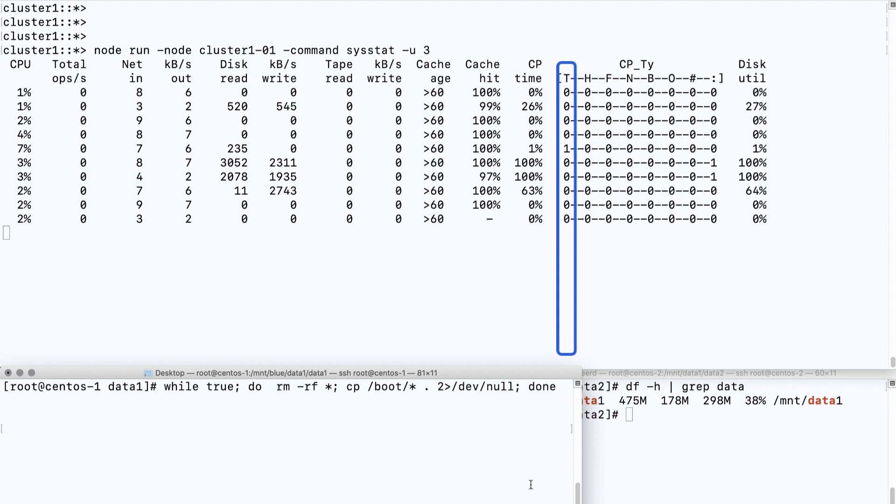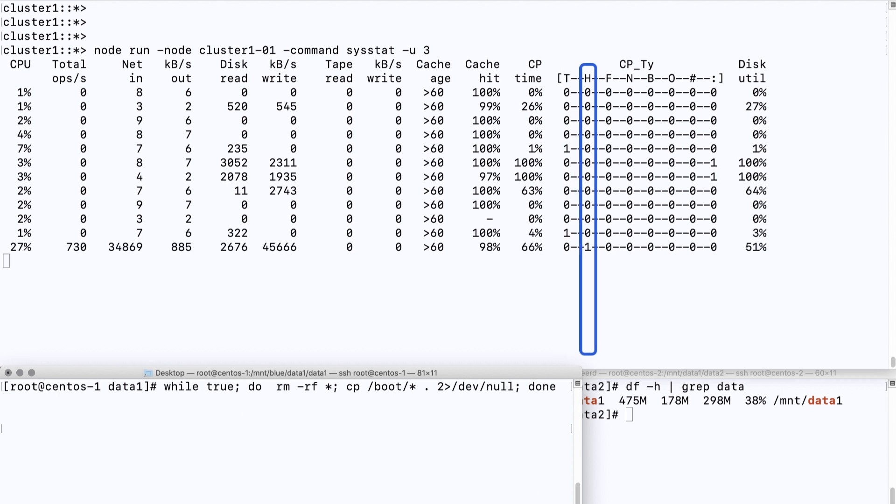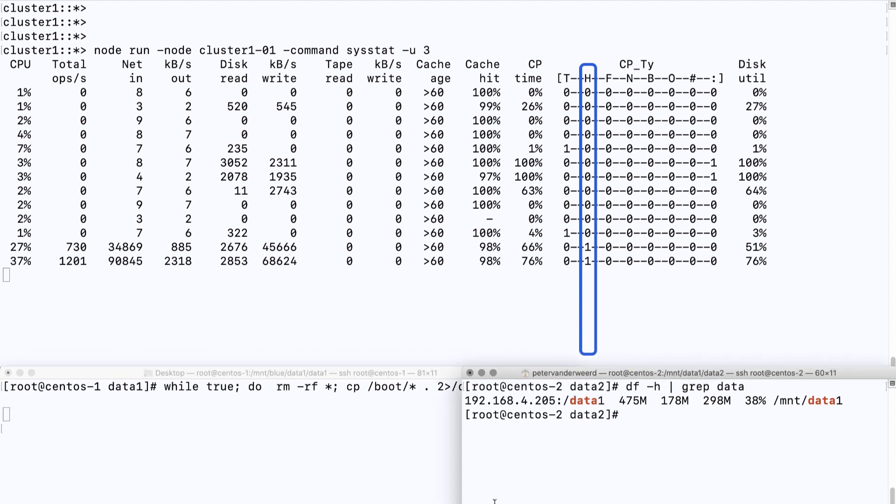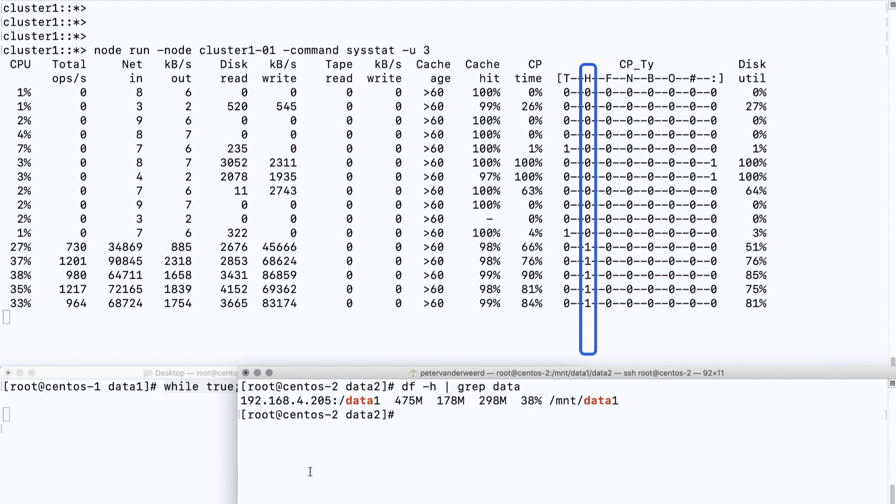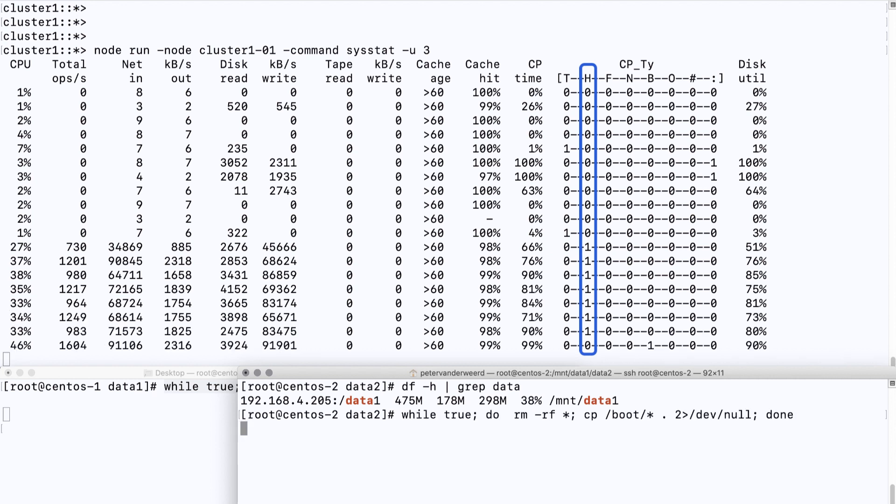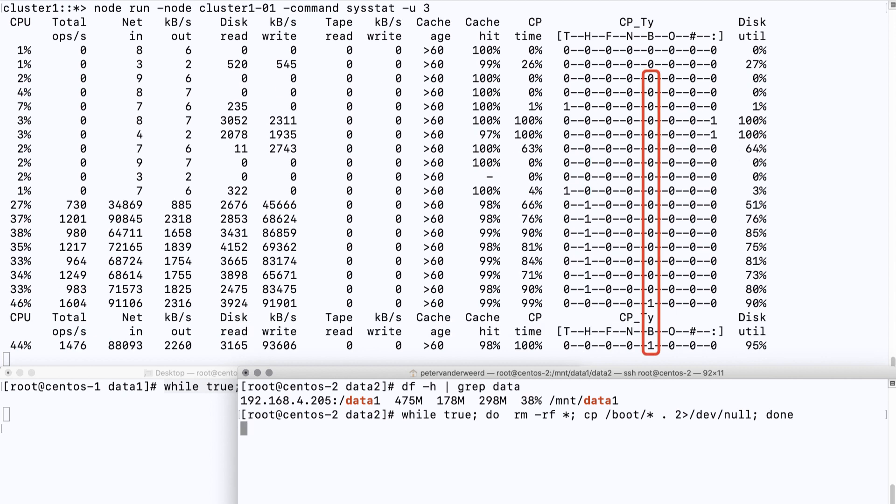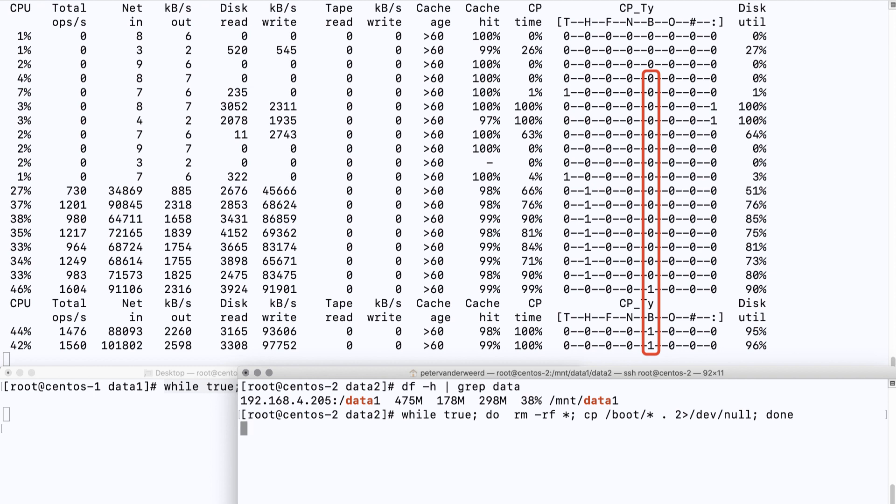All we do is we copy some data, and we do that in a while-true loop. We pretty soon see that the high watermark causes a consistency point. And when we put some more load on the volume on the other Linux machine, we see back-to-back consistency points. And this is not optimal for performance. The reason for every consistency point in this situation is that both NVRAM banks are full all the time. And we see that the disk usage is nearly 100%.